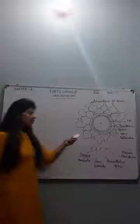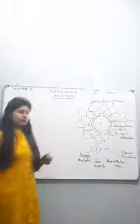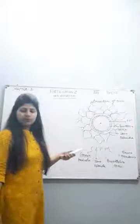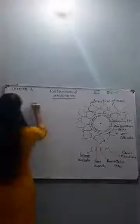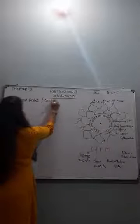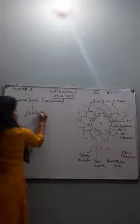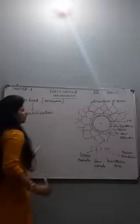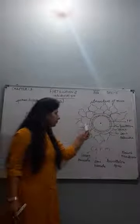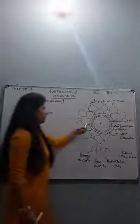Now coming to fertilization: in the sperm head there is an enzyme called acrosome. This acrosome enzyme helps in fertilization by rupturing the corona radiata first, then the zona pellucida, allowing the sperm to move toward the plasma membrane.